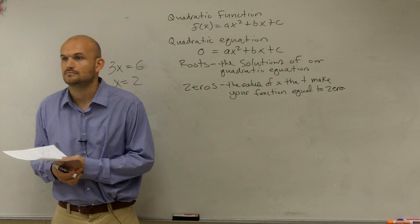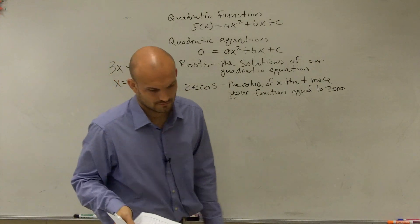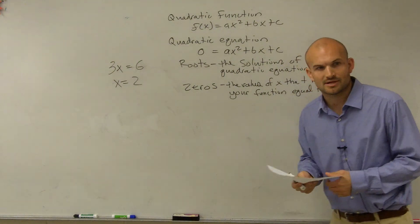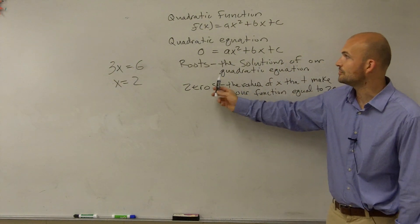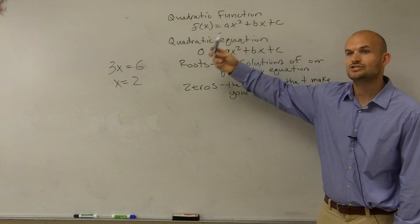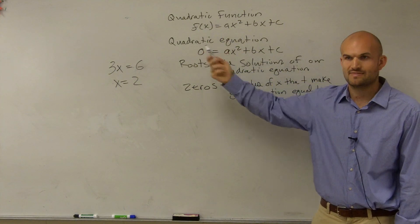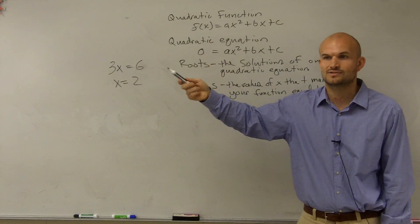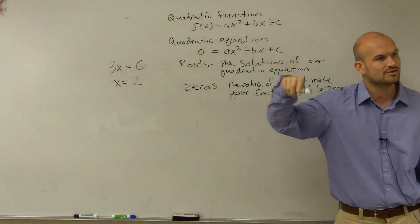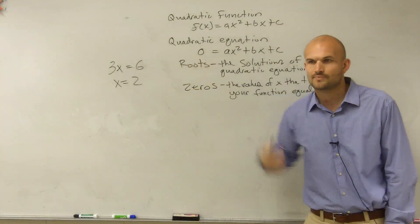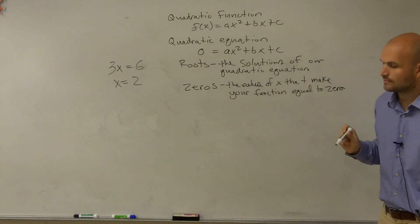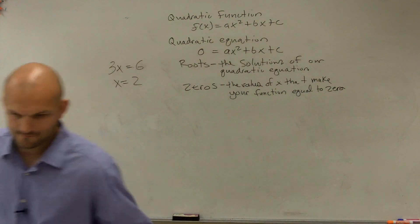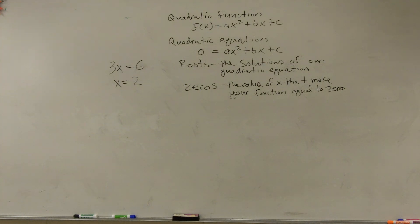So, if I say find the zeros, that means what you're going to do is you're going to take your function and change it to an equation and then find the zeros. So, really, finding the zeros is just changing it from a function to an equation and then finding the roots. So, that's just the basic definition of that. So, we'll end it on there.